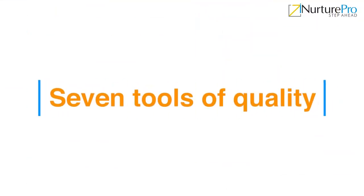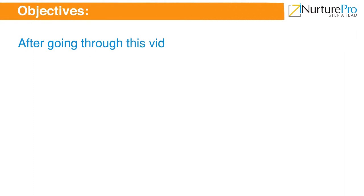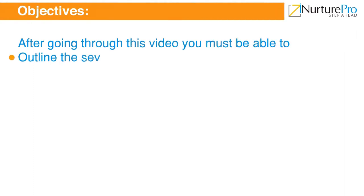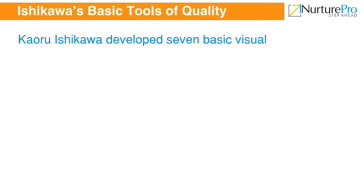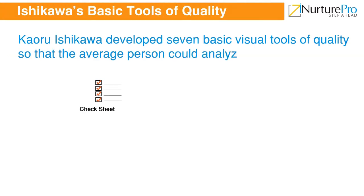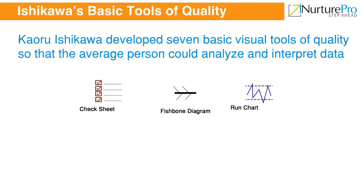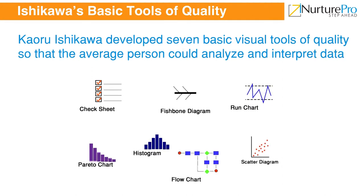Welcome to the Seven Tools of Quality video. After going through this video, you must be able to outline the seven tools of quality. Ishikawa believed that most of a company's issues could be resolved using these seven tools, and they can be easily taught to any member of an organization. Nowadays, many organizations use these tools to control and assure quality.